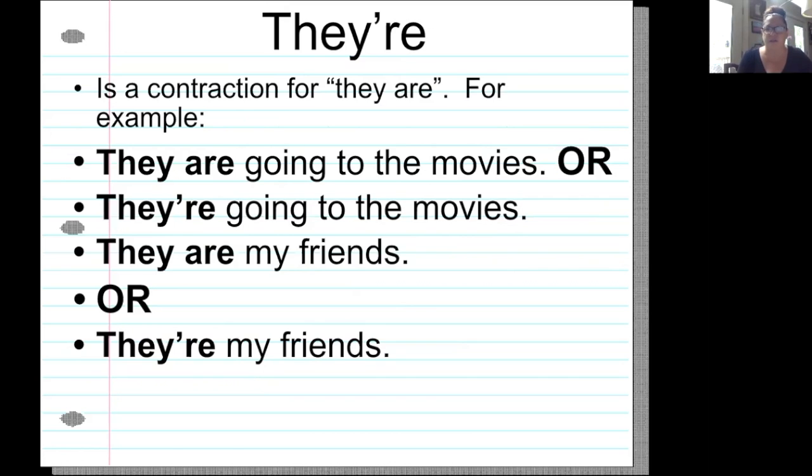If you want to use the contraction, you're going to put an apostrophe in the place of the a and you're going to say they're going to the movies. Another example would be they are my friends.